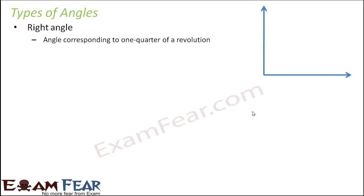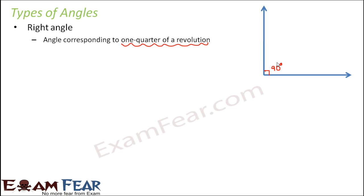Right angle — this is the name given to the angle of 90 degrees. Whenever the angle between two rays is 90 degrees, we call it a right angle. There is another way of defining a right angle: it is that angle which corresponds to one quarter of a revolution. That means you rotate a ray by only one quarter of a revolution. One quarter is nothing but one fourth.